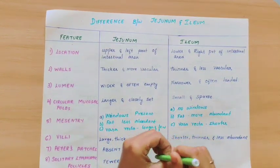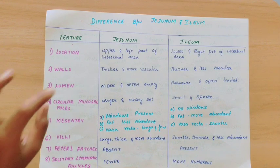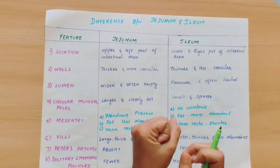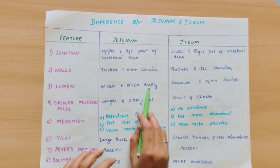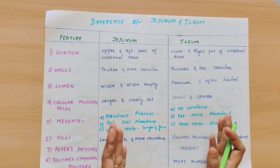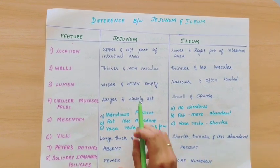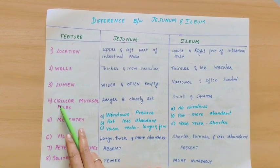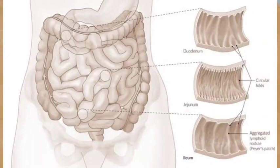Regarding lumen, the jejunum has a wider lumen and is often empty. The ileum has a narrower lumen and is often loaded. Regarding circular mucosal folds, these are present in the small intestine and increase the surface area. In the jejunum, the circular folds are closely set and larger. In the ileum, they are very small and sparse.